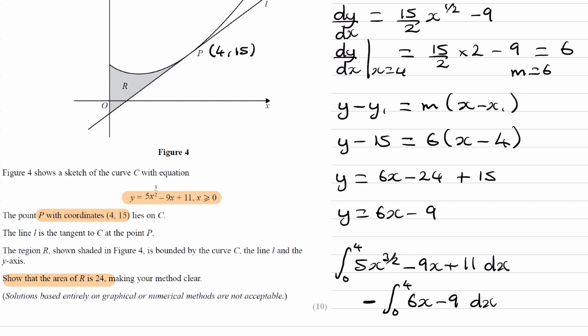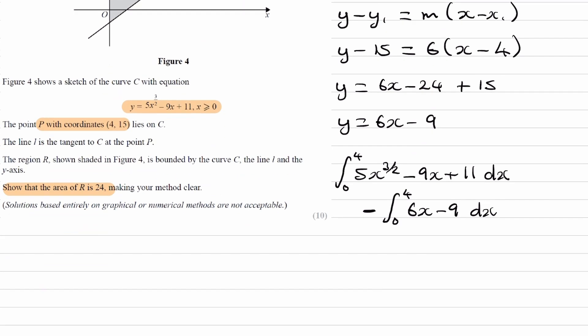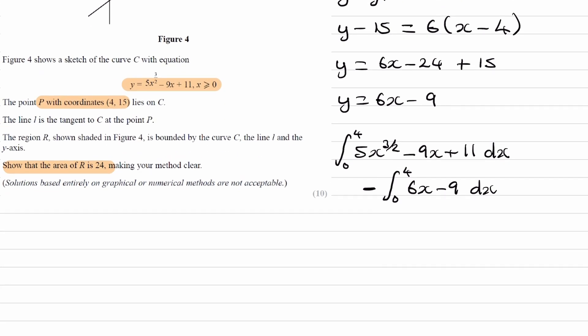But before we evaluate this, let's just simplify it a little bit. Because we have the same limits, whenever you have the same limits for two integrals you're adding together or subtracting, you can combine them to make one integral, which will make things a bit easier.